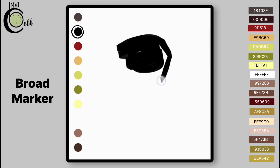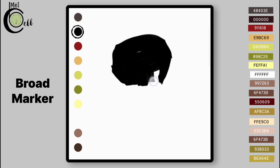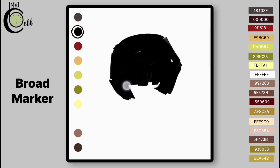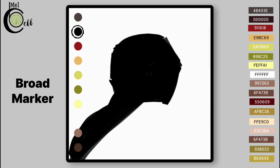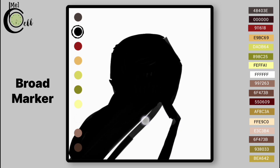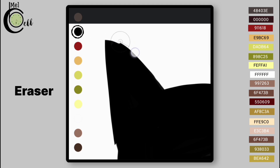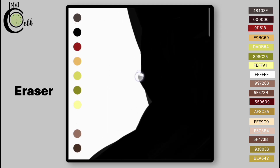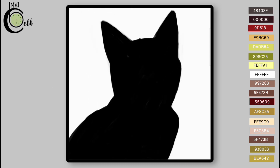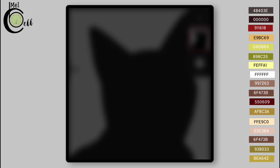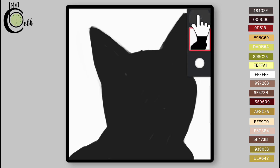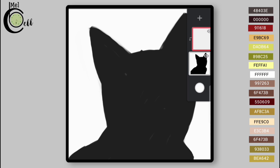Draw a basic shape using Broad Marker from Markers folder. Use Eraser to give it a good shape. Add a layer above Structure Layer.